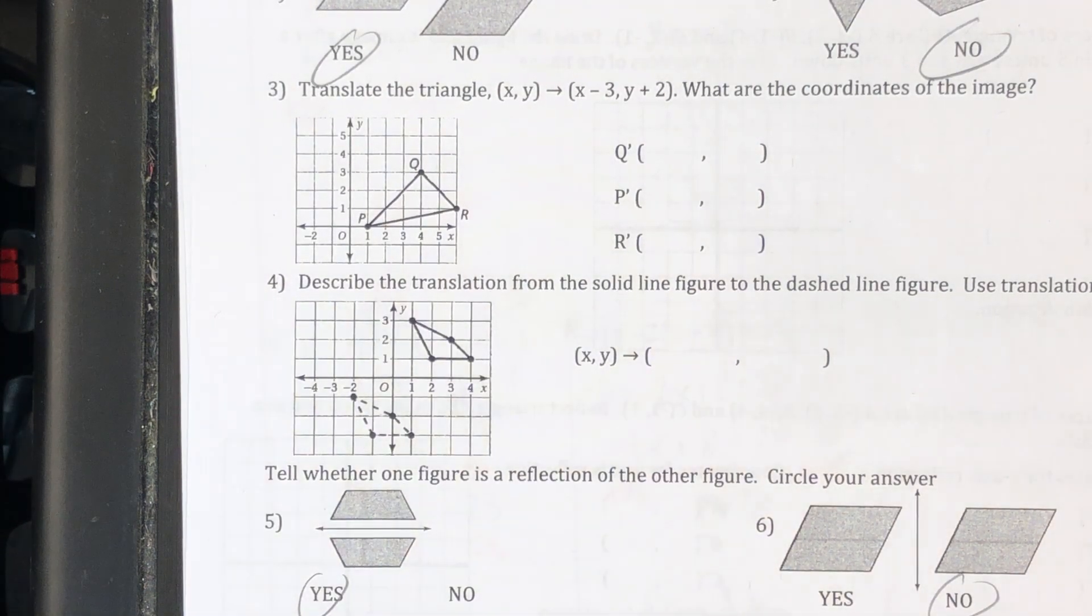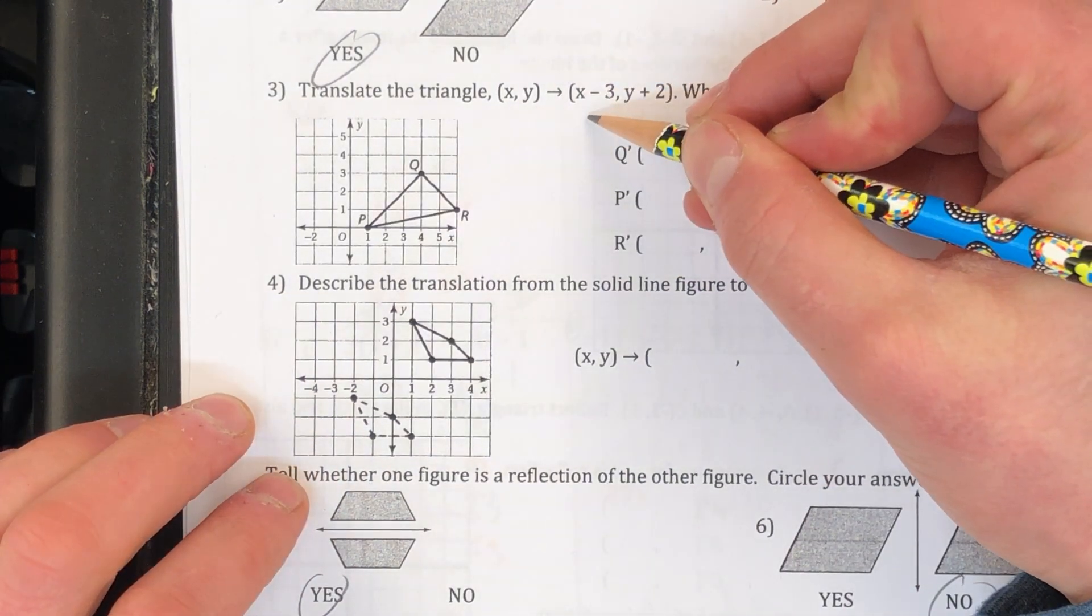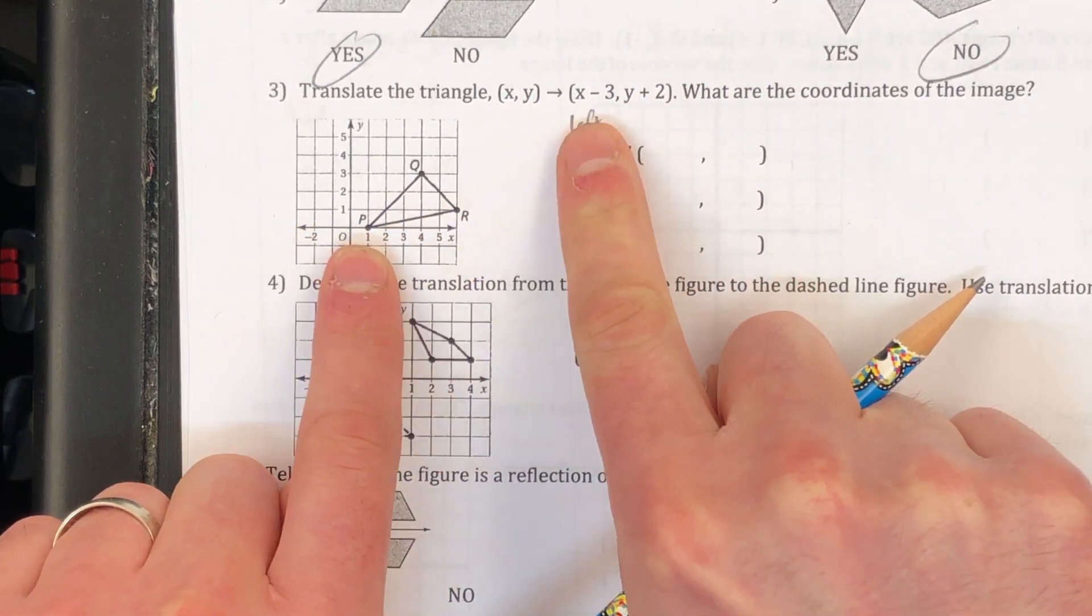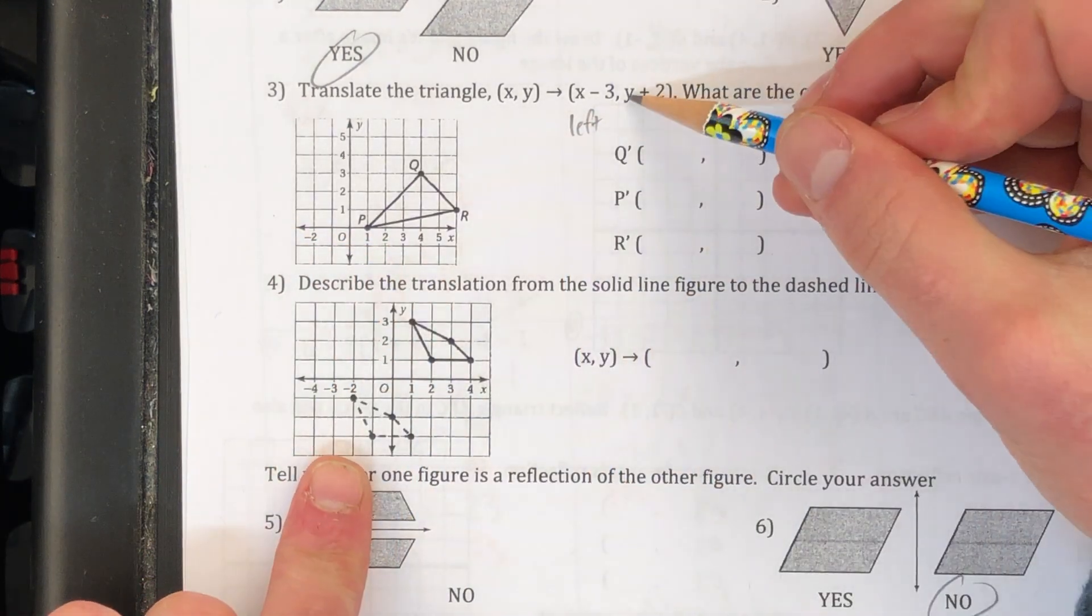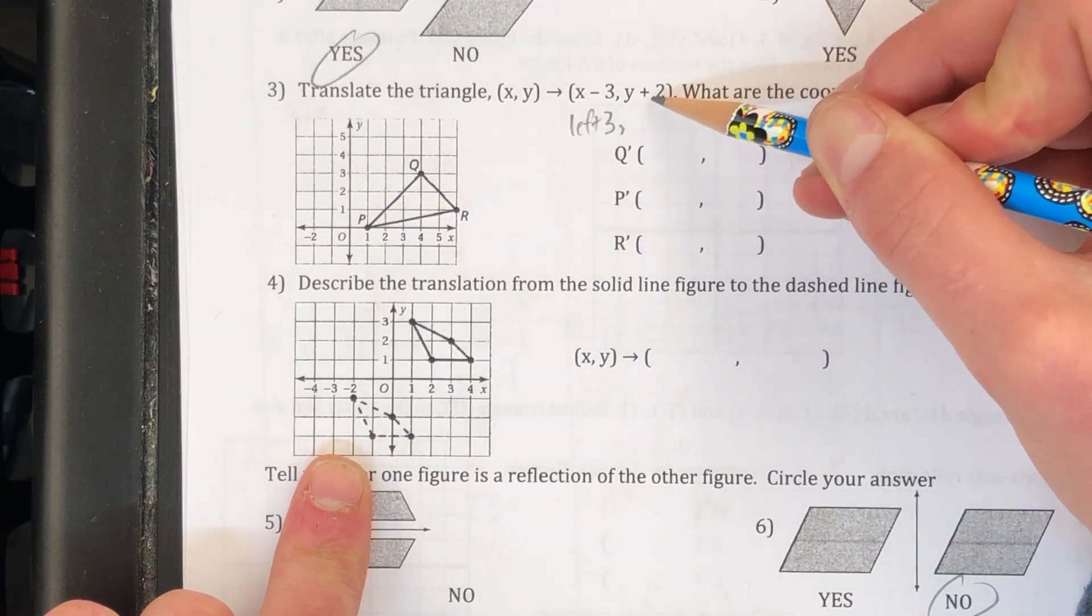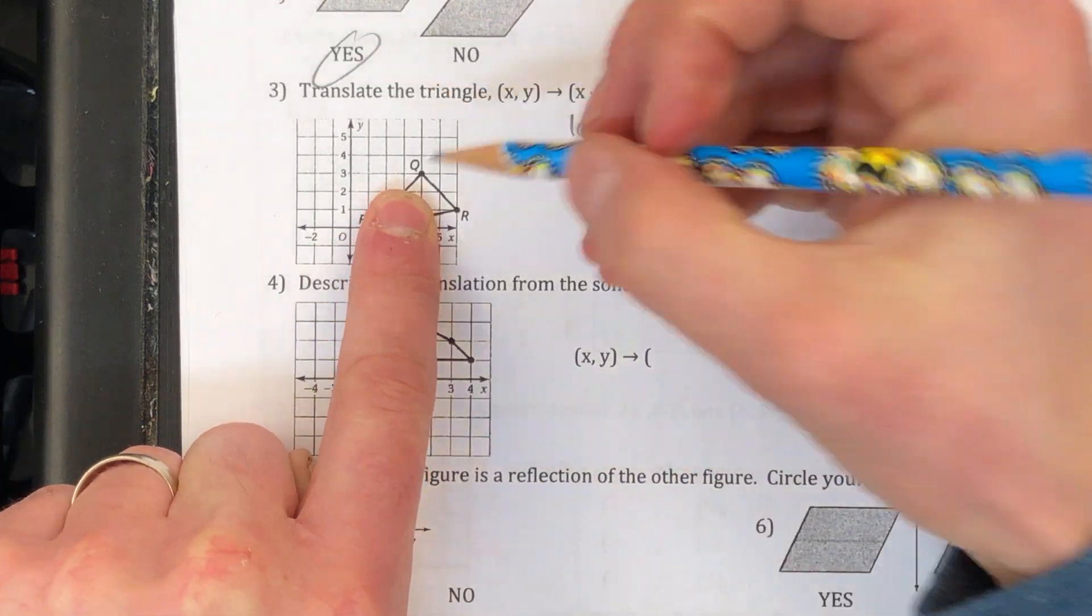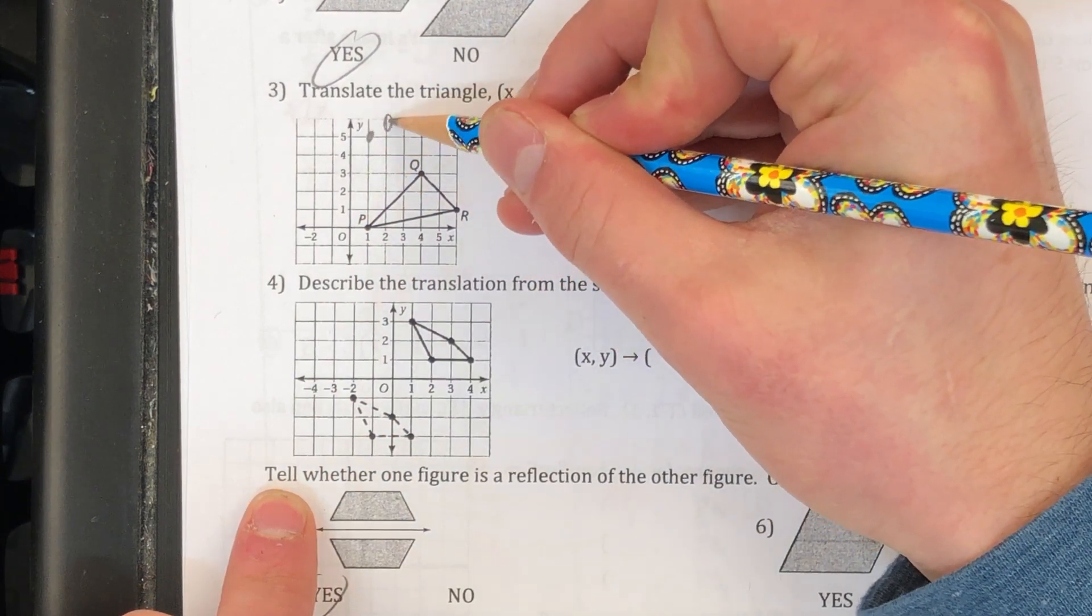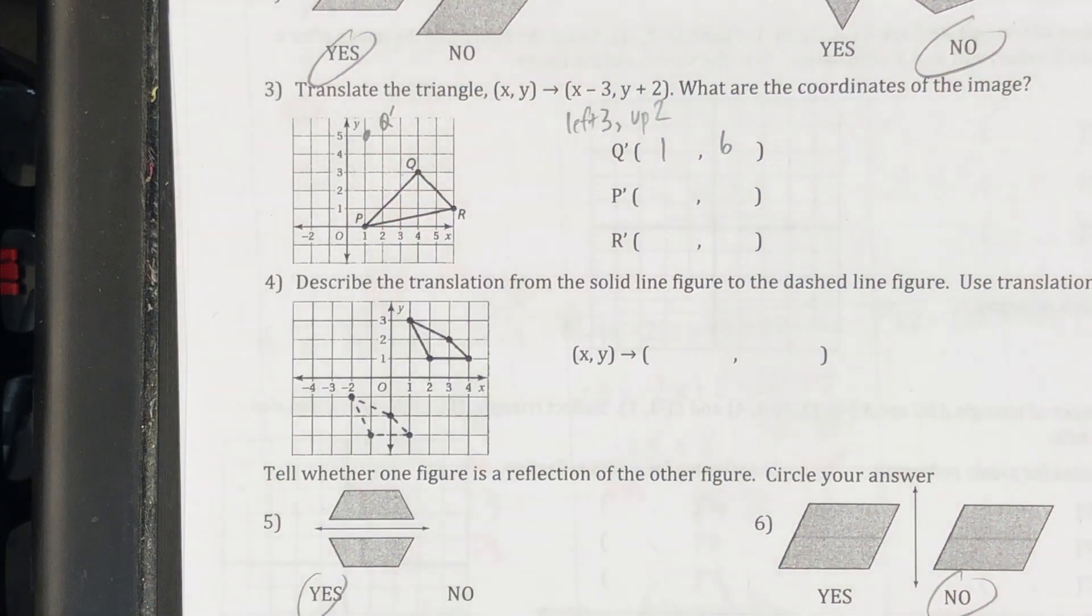So for 3 here this translation notation is kind of funny. This means here that my shape needs to shift left 3 units along the x-axis. X takes me side to side. This tells me my shape needs to shift over to the left 3. Y axis takes me up and down. So this tells me I need to go up 2 on the y-axis. Up 2. So I'll just do a Q for you. Q prime would be left 3, 1, 2, 3. Up 2 on the y-axis, 1, 2. There's my Q prime. That would be the coordinates 1, 6.